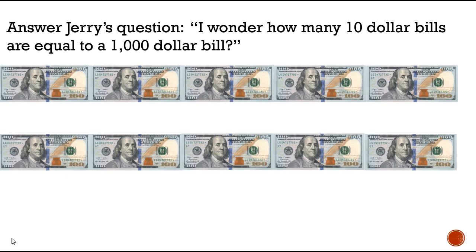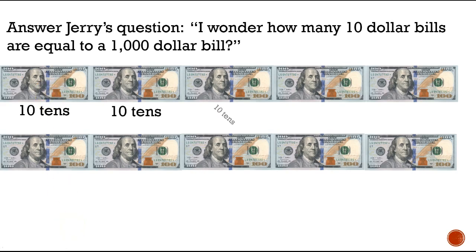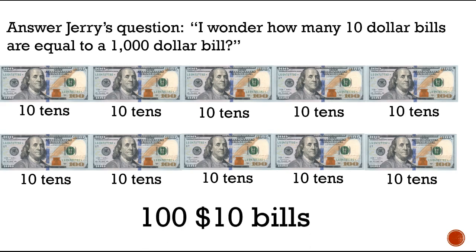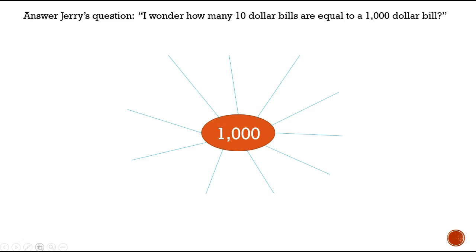We just found that there are 10 tens in a hundred. So for each of those 10 hundreds, there are 10 tens. Let's count: 10 tens here, 10 tens here — that's 20, 30, 40, 50, 60, 70, 80, 90, 100. So there are 100 tens in a thousand. We could give 100 ten-dollar bills!